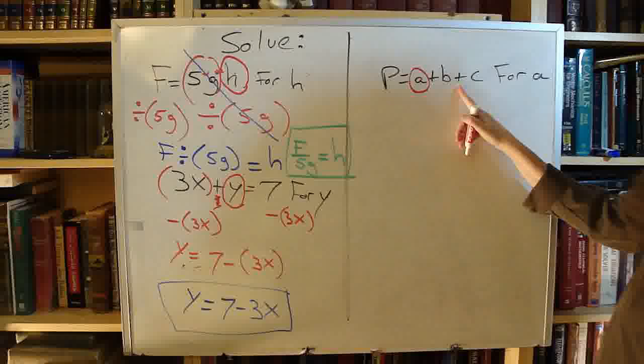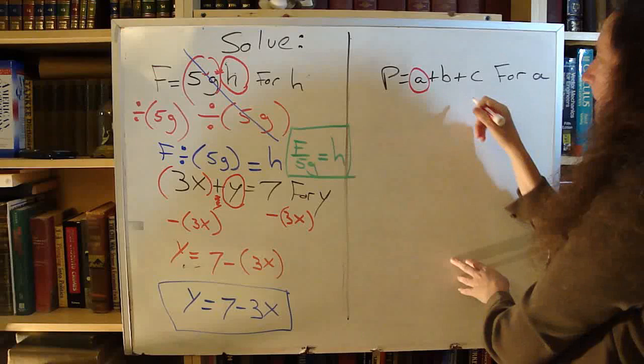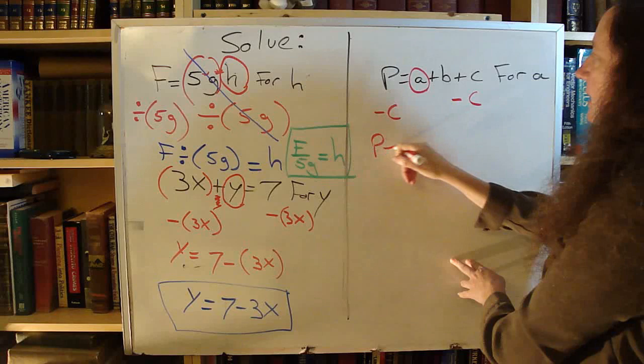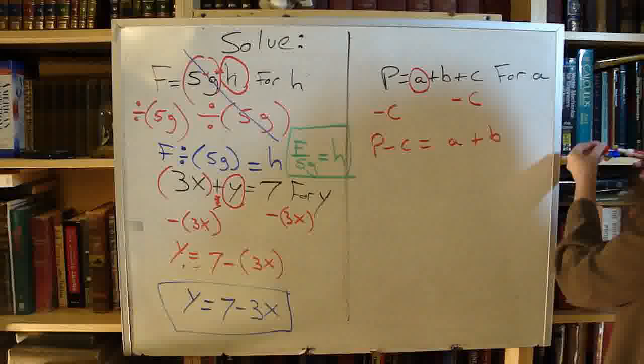So I have addition and I have addition. I am going to subtract them out one at a time so you can see where they are going. I am going to subtract out the C. I now have P minus C equals A plus B.